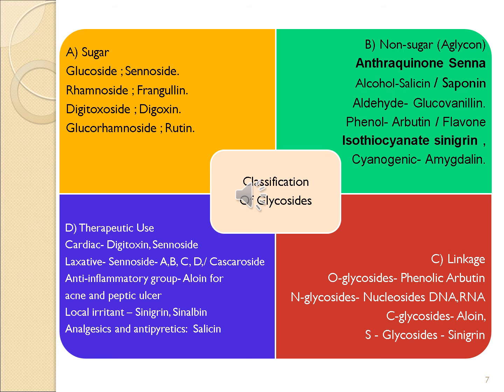If the glycoside contains rhamnose as a sugar, it is called rhamnoside. Similarly, digitoxoside means the glycoside containing digitoxose sugar, and glucorhamnoside means the glycoside containing both glucose and rhamnose as sugar molecules. The second category is based on non-sugar.